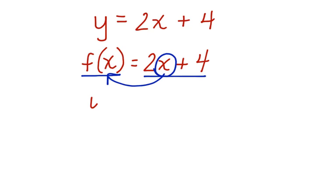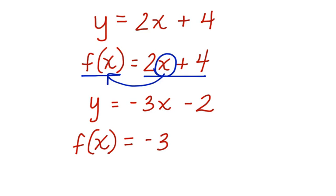If we had an equation that looked like this, y equals negative 3x minus 2, we could do the same thing again. We could just substitute the function of x in for y, and we have negative 3x minus 2.